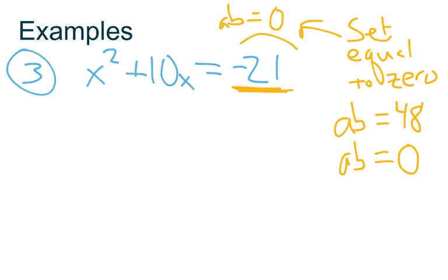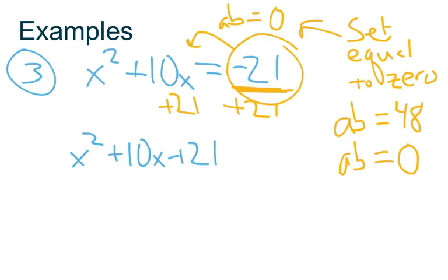So back to the problem at hand, we'll take this 21 and we'll bump it over here by adding it to both sides, so plus 21. So we're looking at x squared plus 10x plus 21 equals 0. Now when you run across this, you've got to know that you're going to be making a trinomial. So when you add something over to the other side, it's going to set it up for a trinomial.